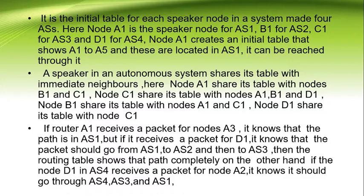A speaker in an autonomous system shares its table with its neighbors. Node A1 shares its table with B1 and C1. Node C1 shares its table with A1, B1, and G1. Node B1 shares its table with A1 and C1. Node D1 shares its table with C1. If router A1 receives a packet for node A3, it knows the path is within AS1. But if it receives a packet for D1, it knows the packet should go from AS1 to AS2, then to AS3, and the routing table shows that complete path.